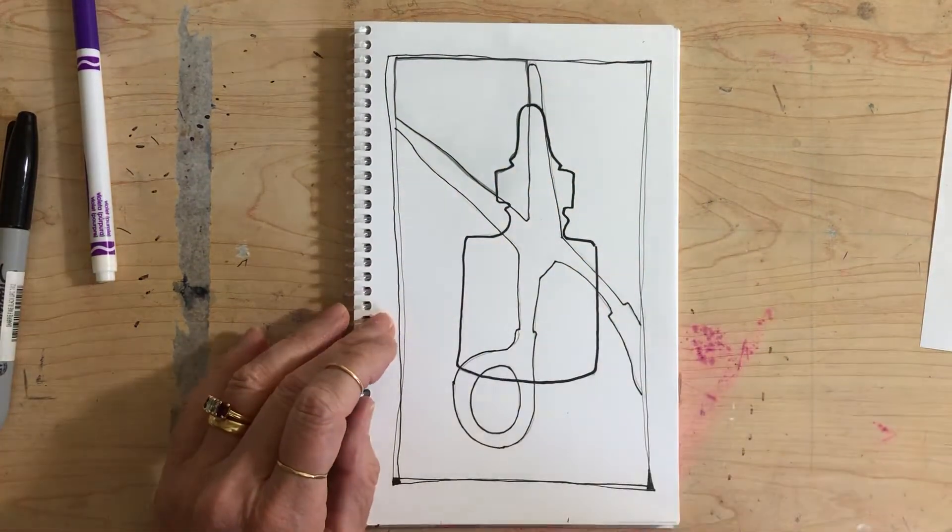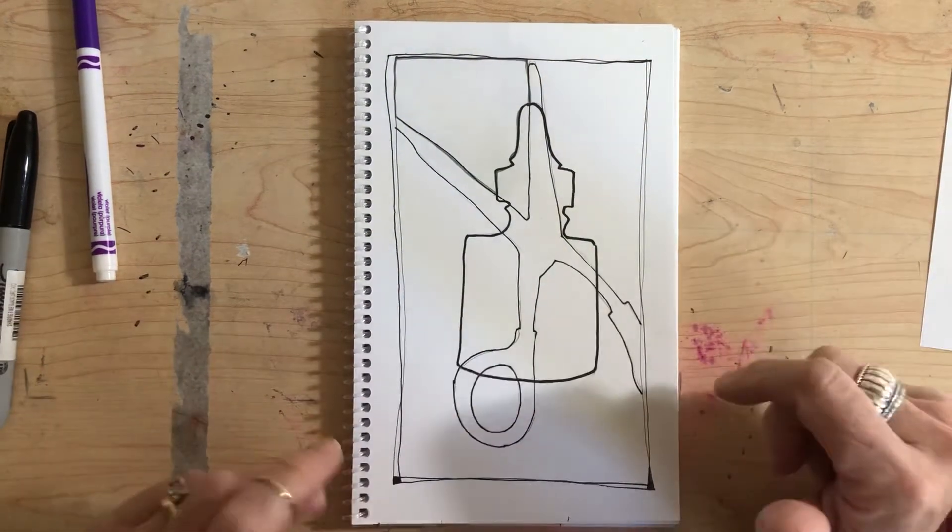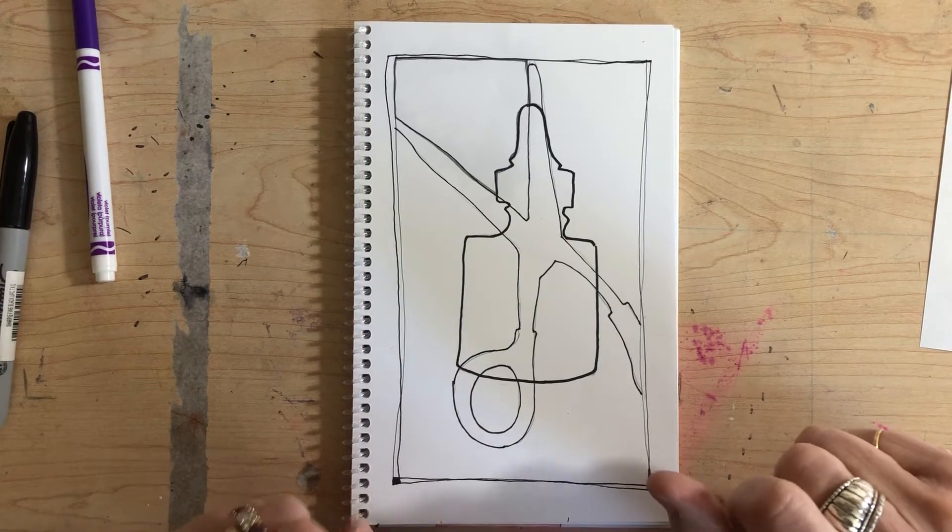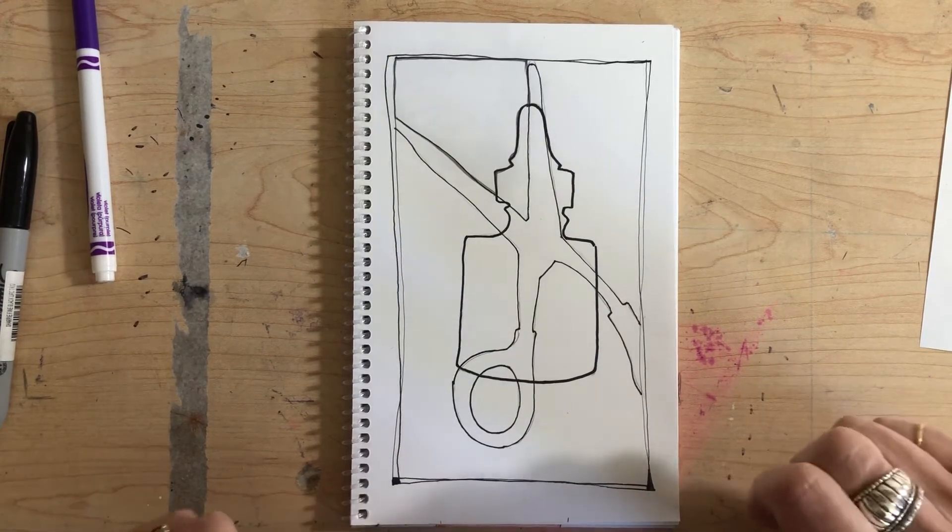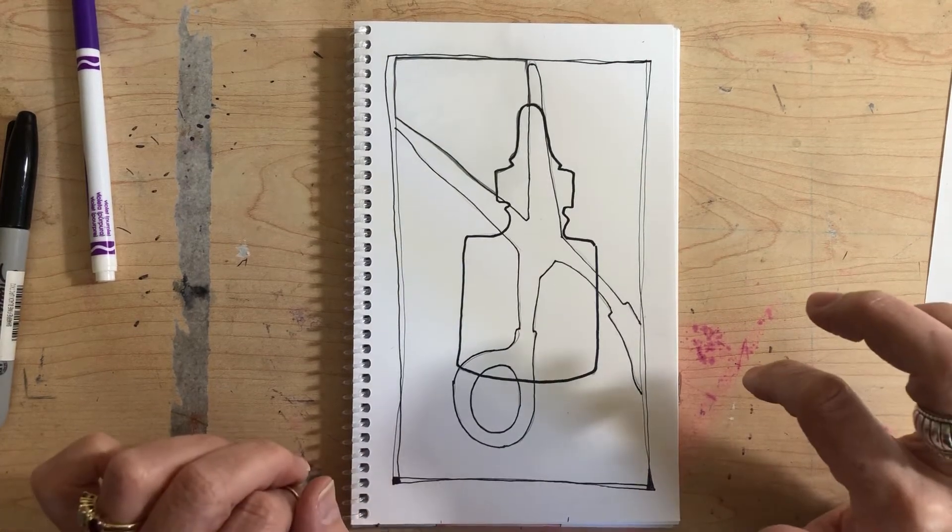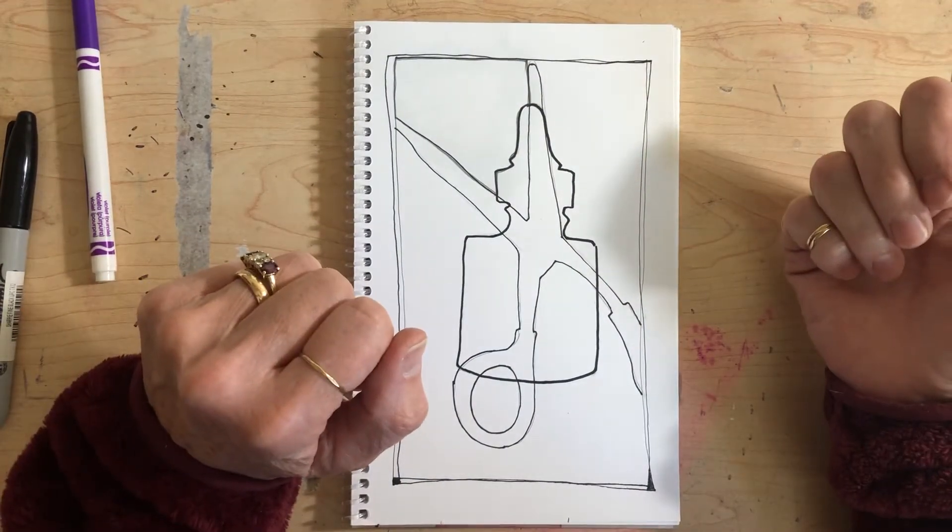What we're going to do is we're going to locate at least two shapes in our drawings. And you're going to make them stand out by gluing cut paper on top of whatever shapes you choose.